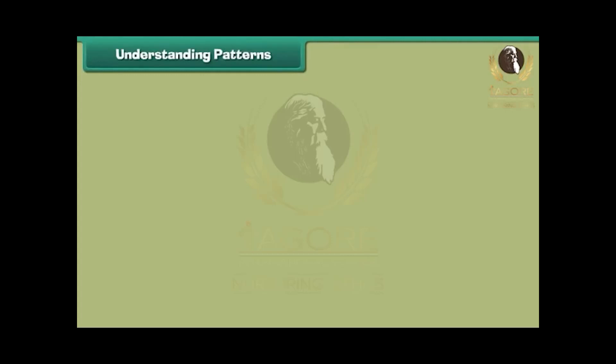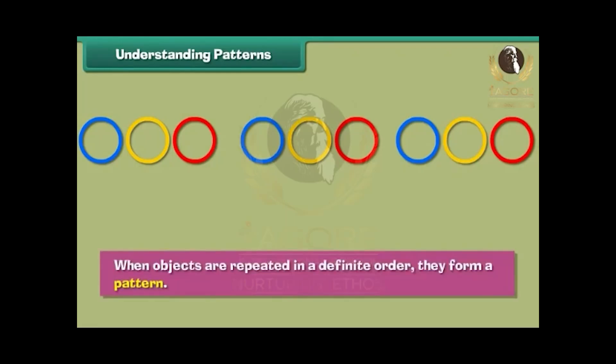Understanding patterns. Look at this arrangement of rings. A blue ring is followed by a yellow ring followed by a red ring. This arrangement is repeated three times. When objects are repeated in a definite order, they form a pattern.